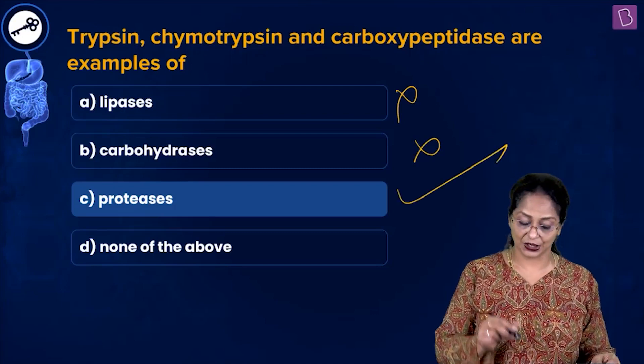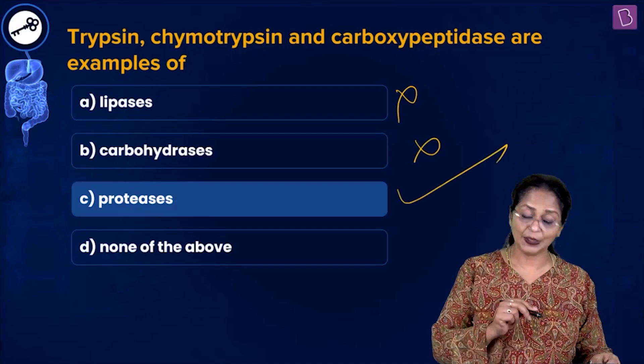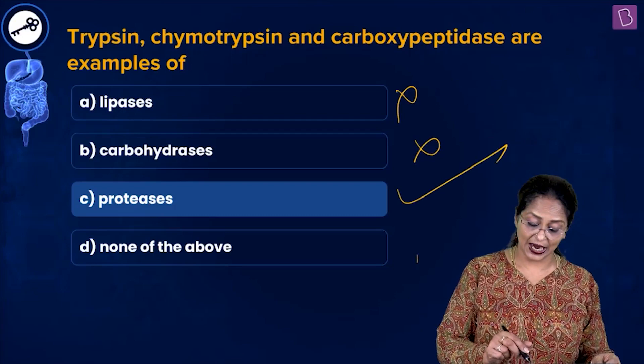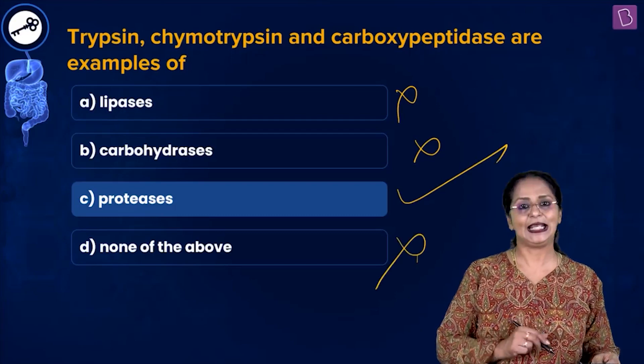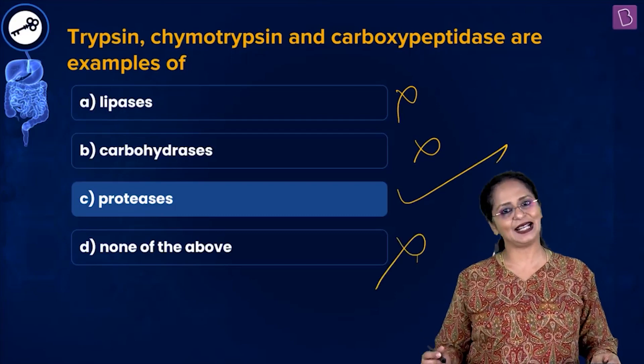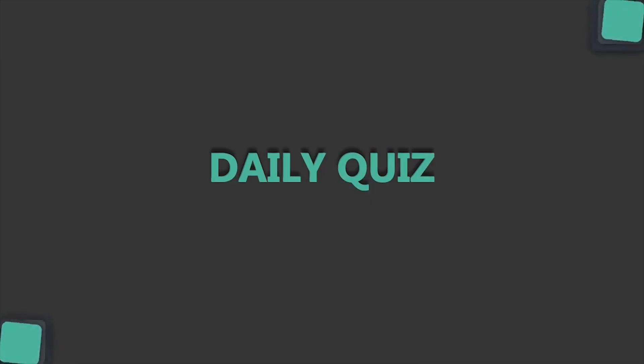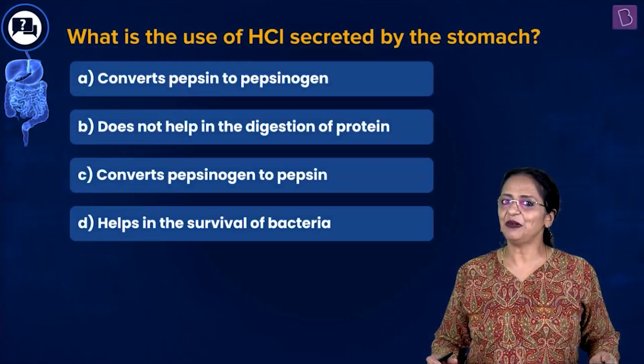So for this question, trypsin, chymotrypsin, and carboxypeptidases are all examples of proteases — C is the right option. You can eliminate A, B, and D.